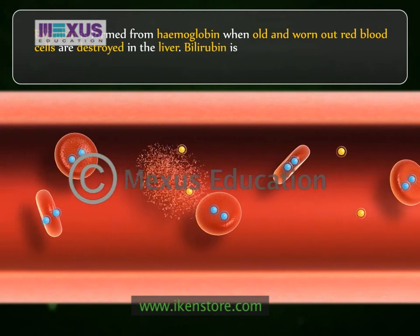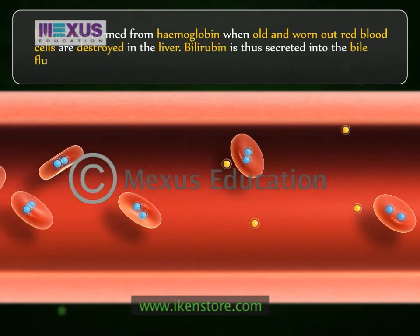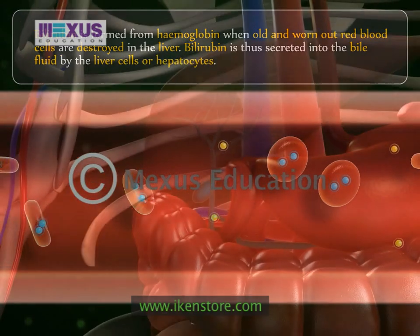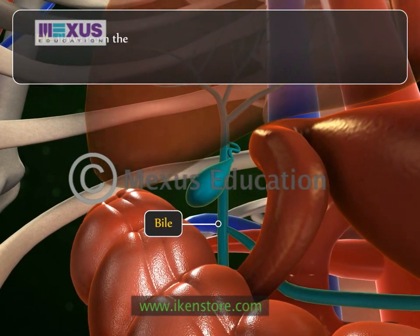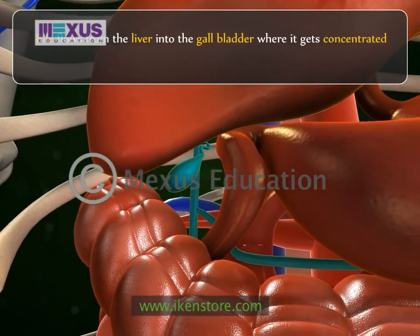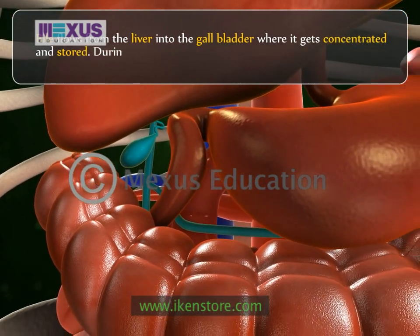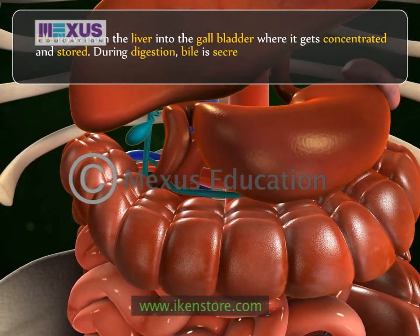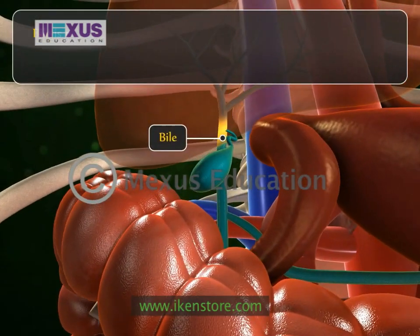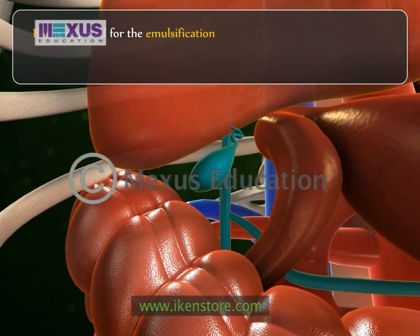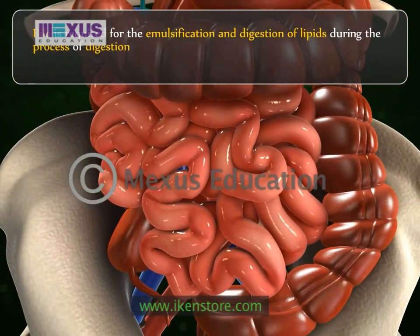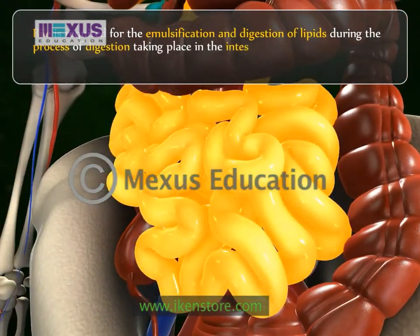Bilirubin is secreted into the bile fluid by the liver cells, or hepatocytes. Bile flows from the liver into the gallbladder, where it gets concentrated and stored. During digestion, bile is secreted into the duodenum. Bile is required for the emulsification and digestion of lipids during the process of digestion taking place in the intestine.